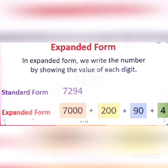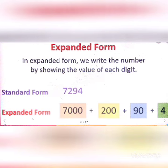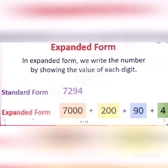Now, expanded form. First, we will discuss standard form. The way we write the number is called the short form, reduced form, or standard form of a number. When a number is expressed as the sum of the place values of its digits, it is called the expanded form. For example, seven thousand two hundred ninety-four is the standard form. Seven is at the thousands place, so seven thousand is the place value of seven. Two is at the hundreds place, so two hundred is the place value of two. Nine is at the tens place, so ninety is the place value of nine. And four is at the ones place, so four is the place value of four. The expanded form is seven thousand plus two hundred plus ninety plus four.